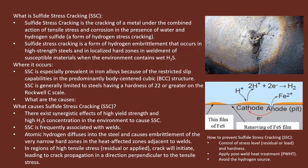To understand what is sulfide stress cracking, we need to understand that this kind of cracking occurs where there is tensile stress and corrosion in the presence of water and hydrogen sulfide (H₂S). This is the environment where this kind of cracking occurs — tensile stress is present, and corrosion occurs because of water and H₂S. These three elements will always be present when this occurs.